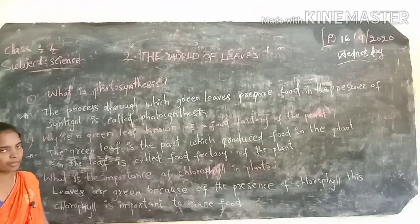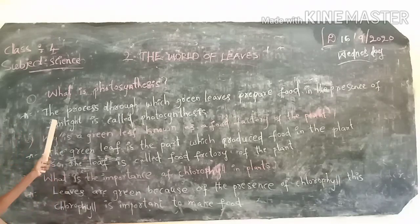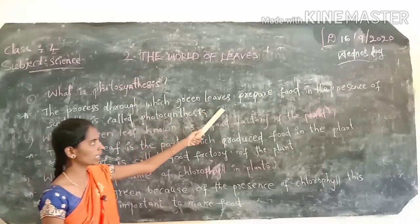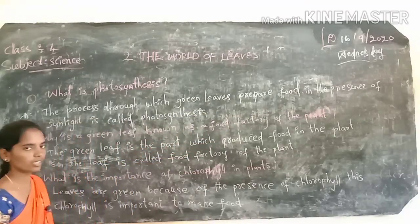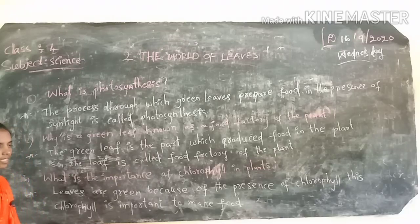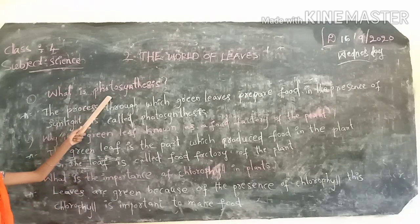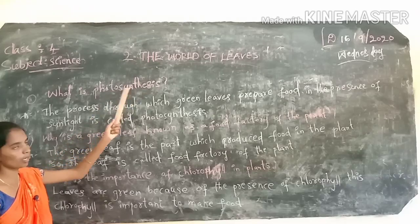The process through which green leaves prepare food in the presence of sunlight is called photosynthesis. Photo means light, synthesis means combination.